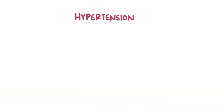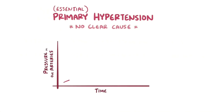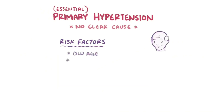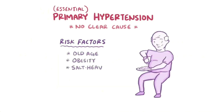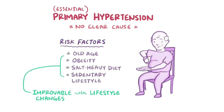About 90 percent of the time, hypertension happens without a clearly identifiable underlying reason — this is called primary hypertension or essential hypertension. Over time, pressure in the arteries silently creeps up. Risk factors include old age, obesity, salt-heavy diets, and sedentary lifestyles. With the exception of age, all of these can be improved with lifestyle changes, which can help reduce hypertension.